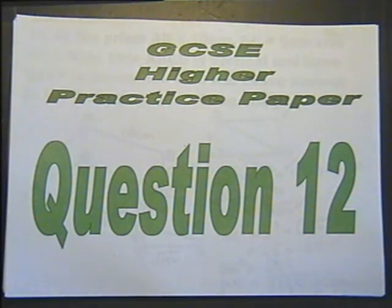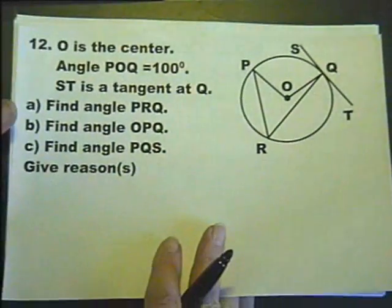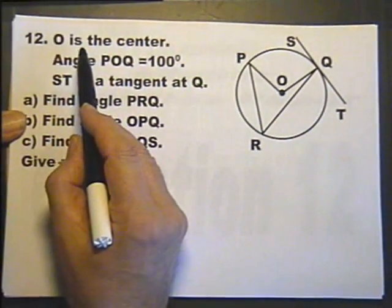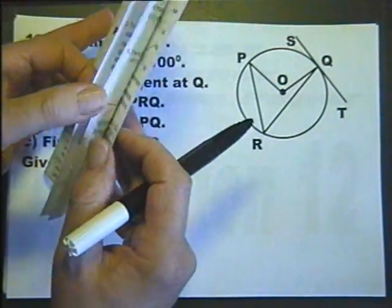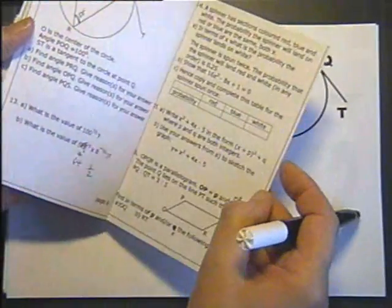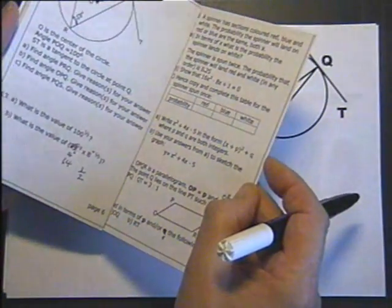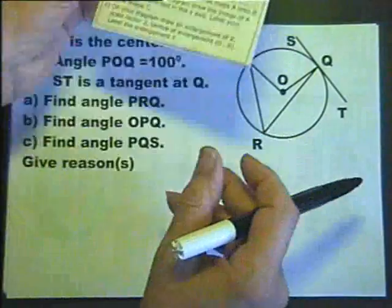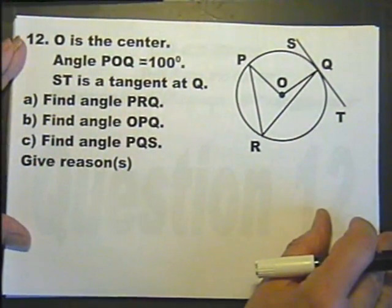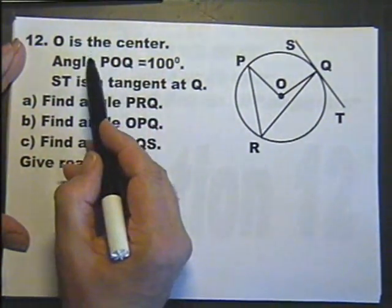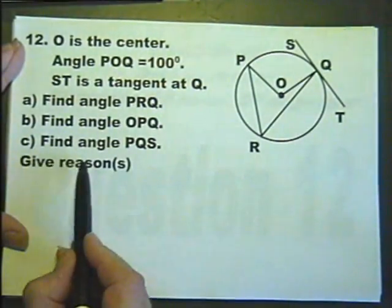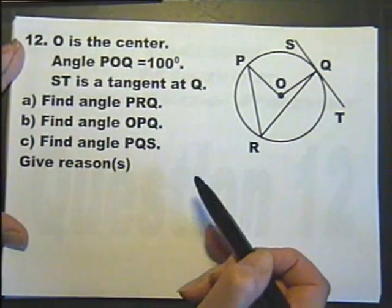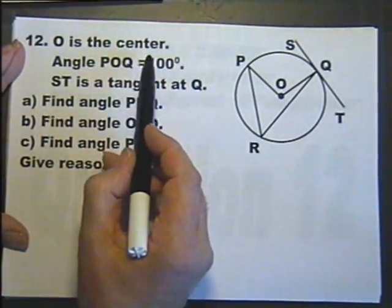GCSE Higher practice paper 4A, question number 12. There might be more writing on the exam paper that you've bought than what I show here. Sometimes there's more writing on the printed exam paper. I've saved space by only writing once that O is the center of the circle, instead of after each question.